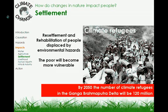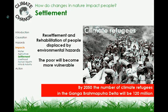India's greatest challenge this century will be to resettle and rehabilitate people displaced by environmental hazards. Poor people will be more vulnerable to climate hazards because they depend on natural resources for earning their livelihood. It has been predicted that the number of climate refugees will be 120 million from the Ganga-Brahmaputra Delta alone. This will aggravate problems of urbanization and food security.